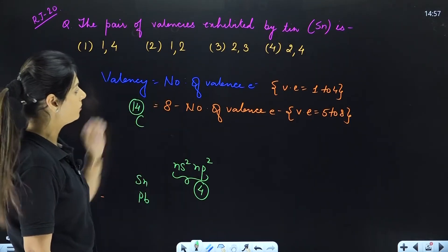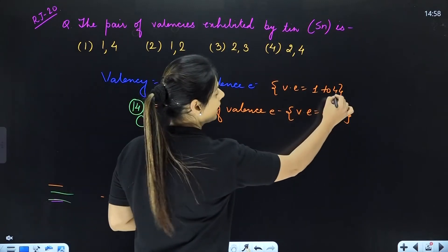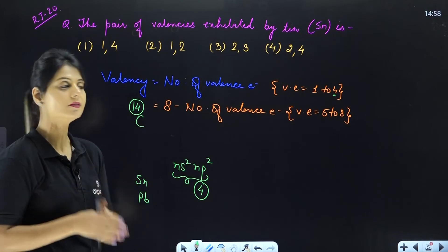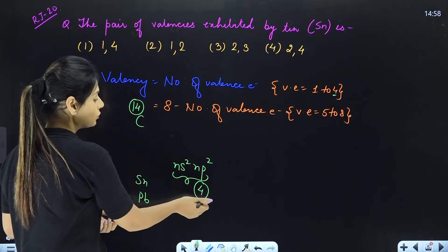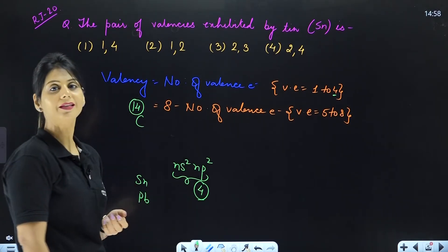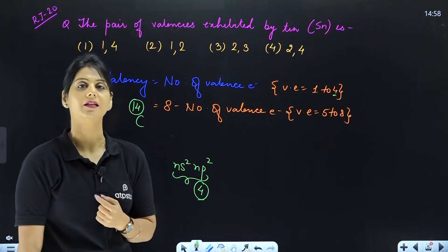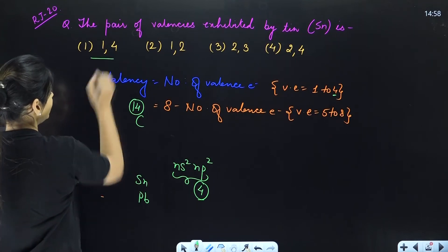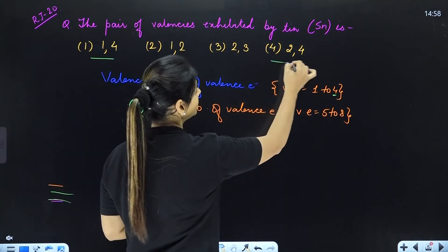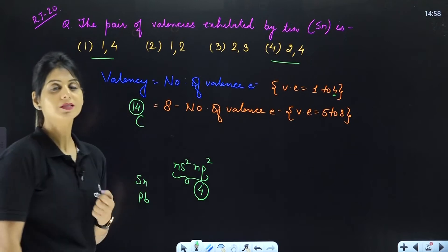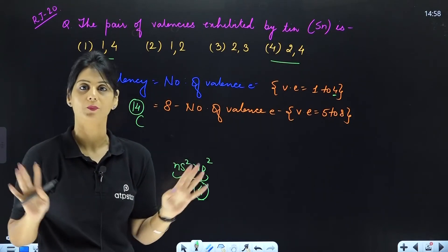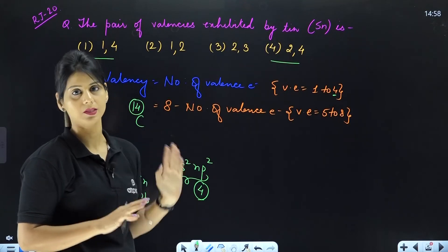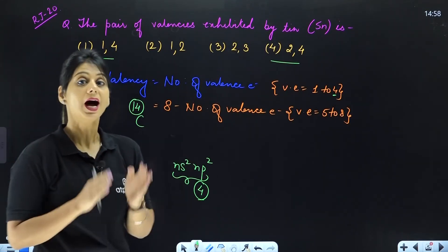Now, if we apply the valency formula with 4 valence electrons, the valency is 4. Looking at the options, valency 4 is given in option 1, and another option is option 4. So we can easily knock out two options — option 2 and option 3 are not the answer. The answer is either option 1 or option 4.